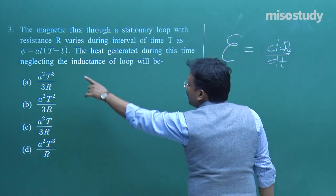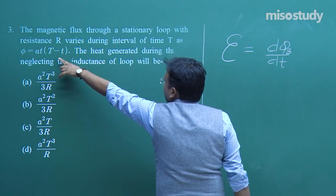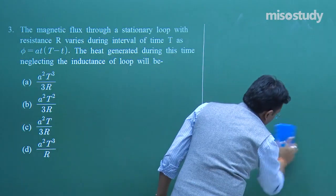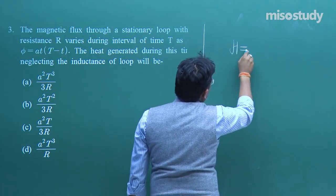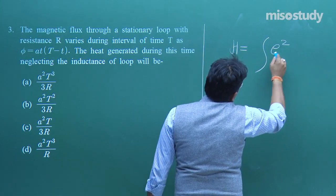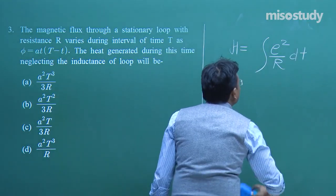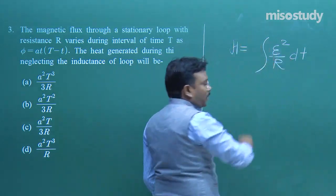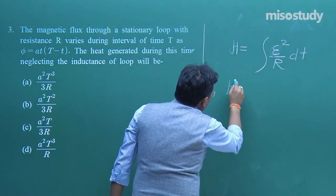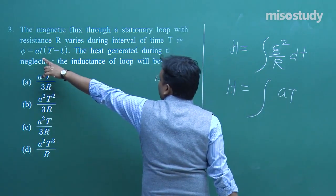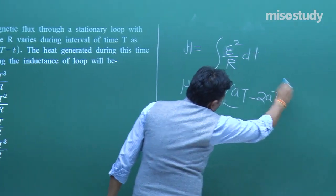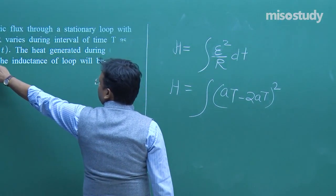Using the given φ = AT(T − t) = AT² − ATt, we differentiate: dφ/dt = A·d/dt[T² − T·t]. Wait — here T is the total time interval (constant) and t is the running time. So φ = A·(T·t − t²), giving dφ/dt = A(T − 2t). Then H = ∫₀ᵀ [A(T − 2t)]² / R · dt.